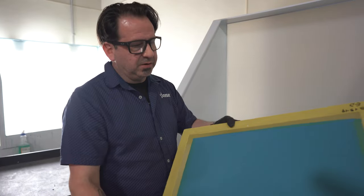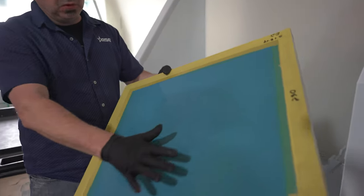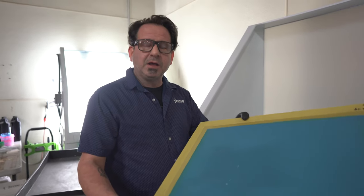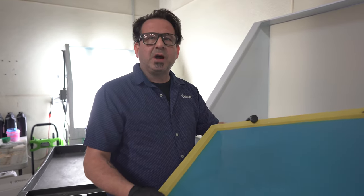Now that our screen is coated, we have a nice smooth surface throughout. We're going to go ahead and place these on the drying rack, give a little forced air over them and let them dry.